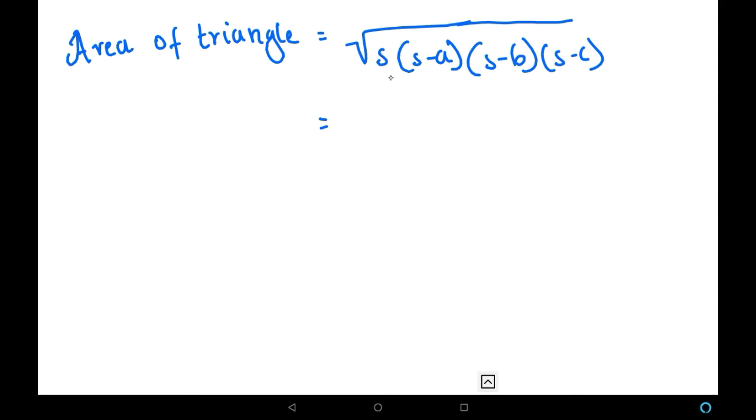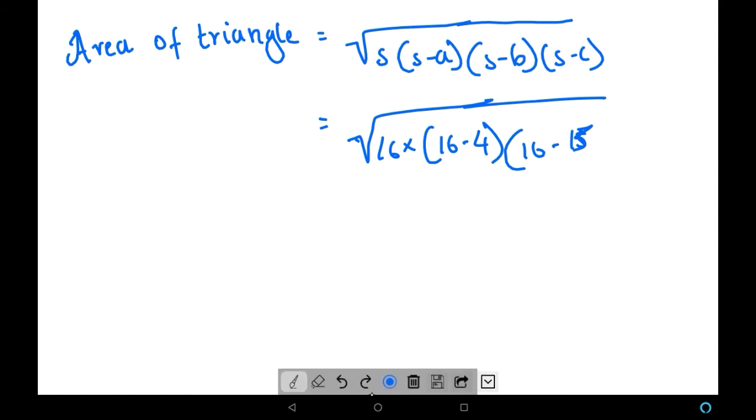So let us substitute the values: root of 16 into 16 minus 4, that is 16 minus b value is 13, and then s is 16, c value is 15.